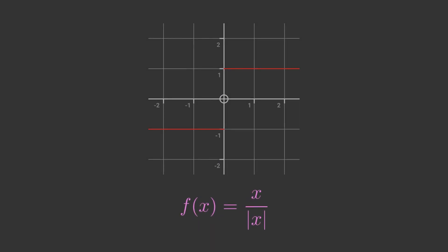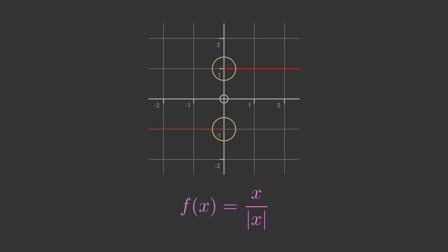Here is the function x divided by modulus x. This function is similar to x over x, but the denominator is always positive. When x is less than 0, the numerator is negative and the denominator is positive; they have the same magnitude, so the function value is minus 1. When x is positive, both values are positive and the same magnitude, so the value is plus 1. When x is 0, the value is undefined. If we start with a small positive value of x, f of x is 1 and remains at 1 as x approaches 0 — this is the right limit. If we start with a small negative value of x, f of x is minus 1 and remains at minus 1 as we approach 0 — this is the left limit. This function has both a left limit and a right limit at 0, but the two limits are not equal, so no overall limit exists at 0.